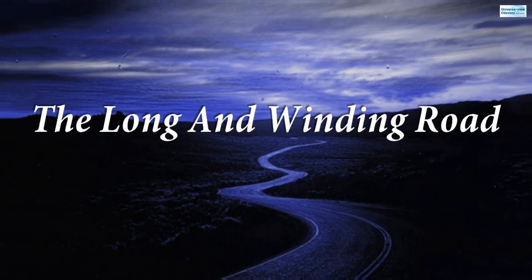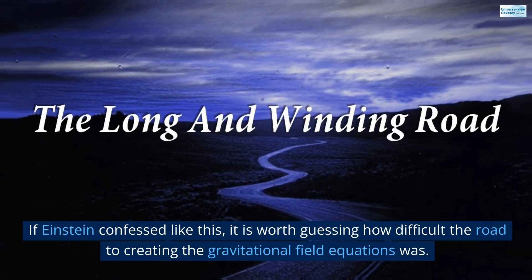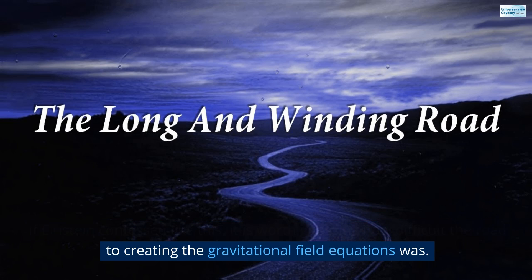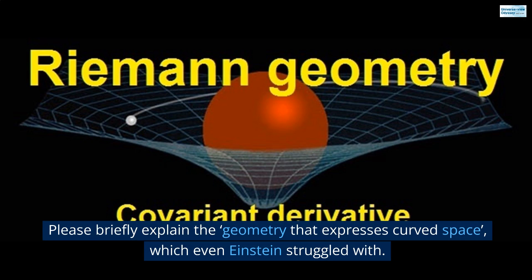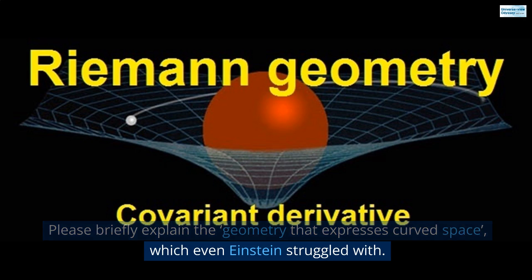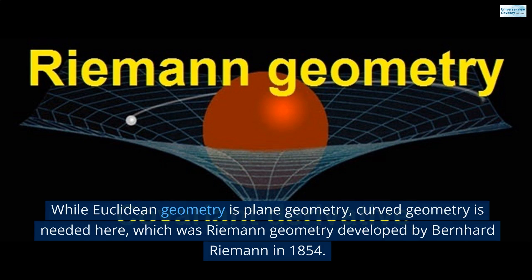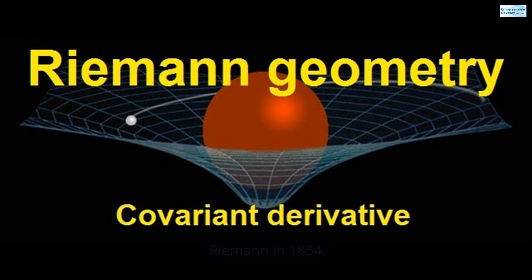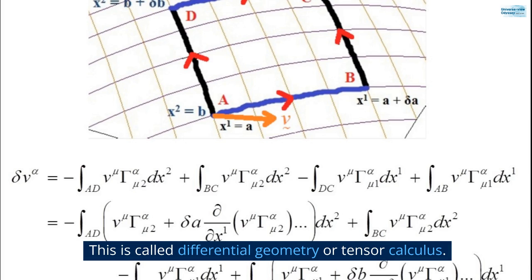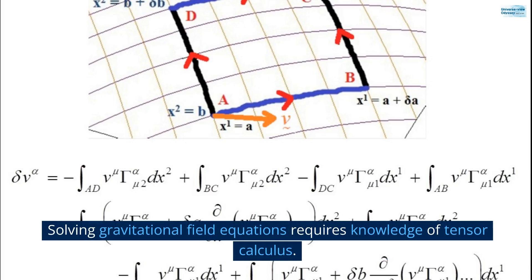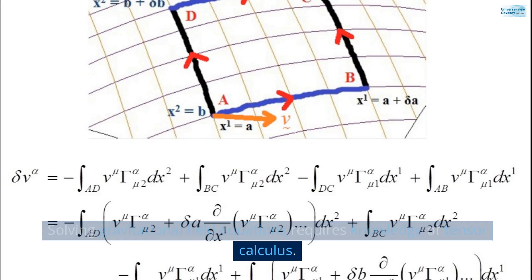Q5. If Einstein confessed like this, it is worth guessing how difficult the road to creating the gravitational field equations was. Please briefly explain the geometry that expresses curved space, which even Einstein struggled with. While Euclidean geometry is plain geometry, curved geometry is needed here — which was Riemann geometry developed by Bernard Riemann in 1854. This is called differential geometry or tensor calculus. Solving gravitational field equations requires knowledge of tensor calculus.